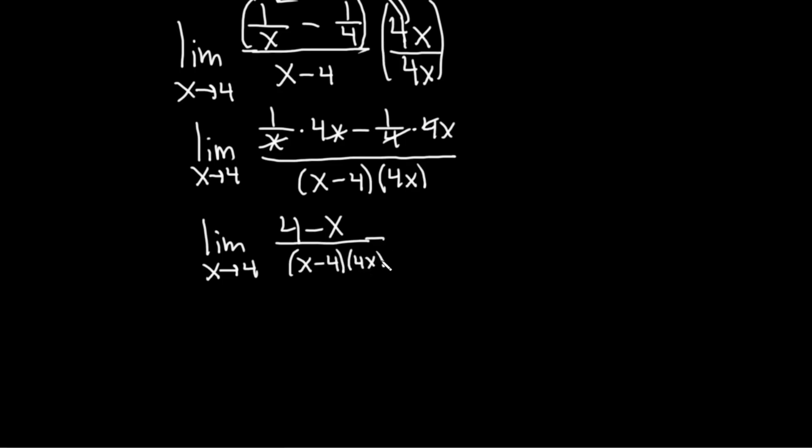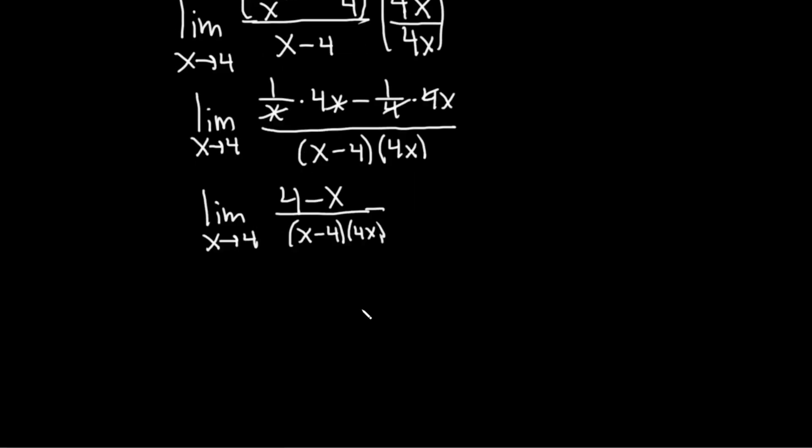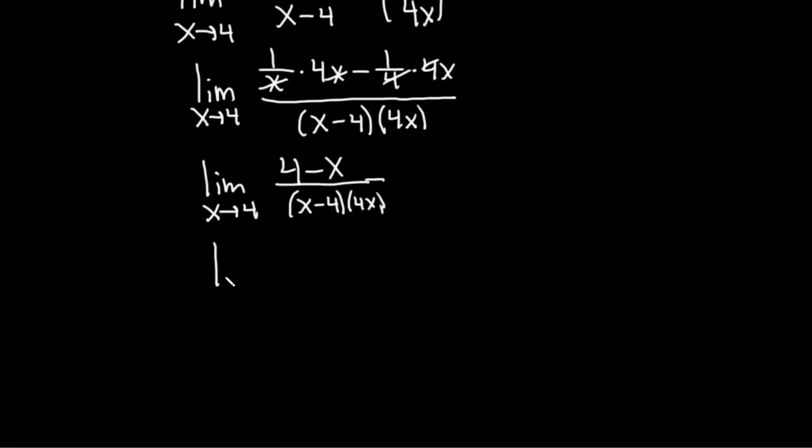This is the limit as x approaches 4. And the interesting thing here is that we can do something with this numerator. So it would be really nice if this was an x minus 4 because then we would be able to cancel and then plug in the 4. So what we're going to do is just write it down x minus 4.